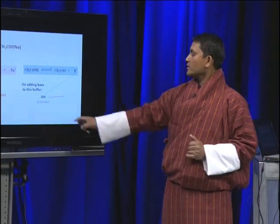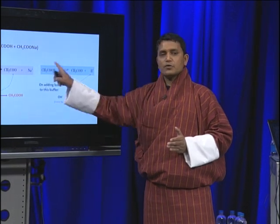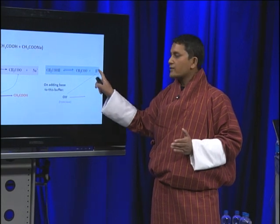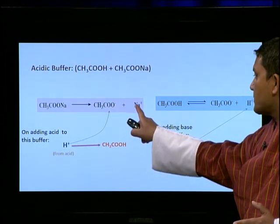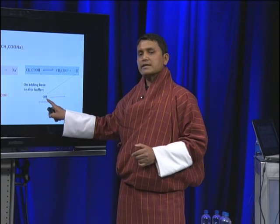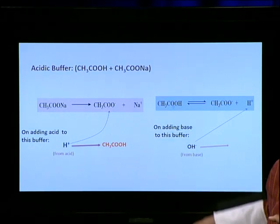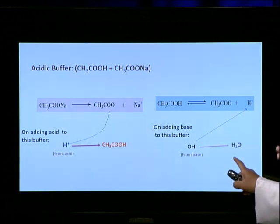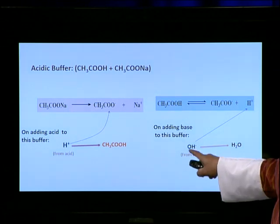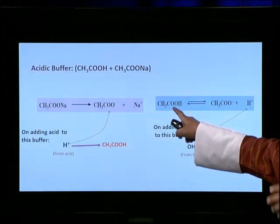If we add base to this acetic buffer solution, we are adding OH- ions. The OH- ions will combine with H+ ions coming from acetic acid. They cannot combine with Na+ ions because Na+ and OH- would form NaOH — sodium hydroxide — a strong electrolyte that would dissociate back to give OH- ions, so the OH- would not be captured. Therefore, OH- must combine with H+ from acetic acid to form water. Water, being a weak electrolyte, will not dissociate back to give OH- and H+ ions. That way, all OH- ions from the base are captured, and the buffer solution maintains its constant pH.